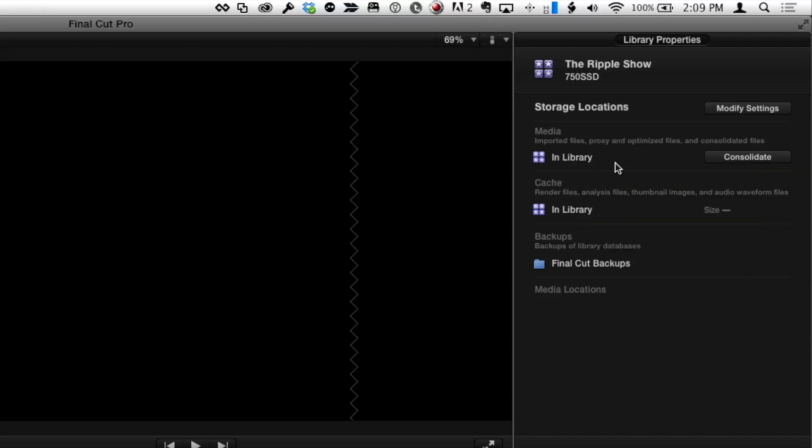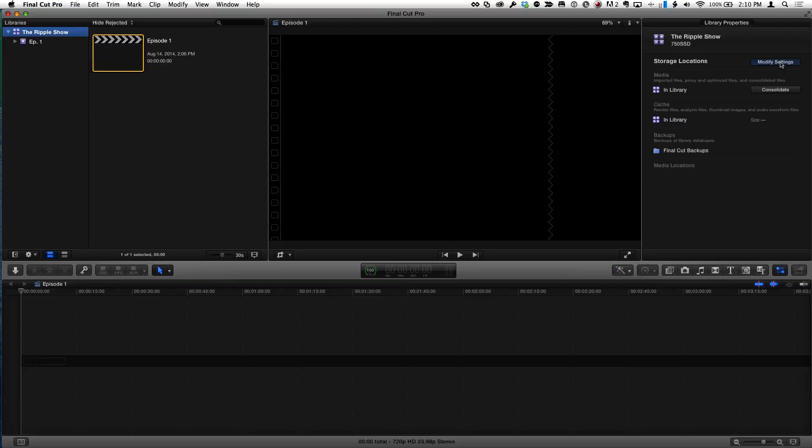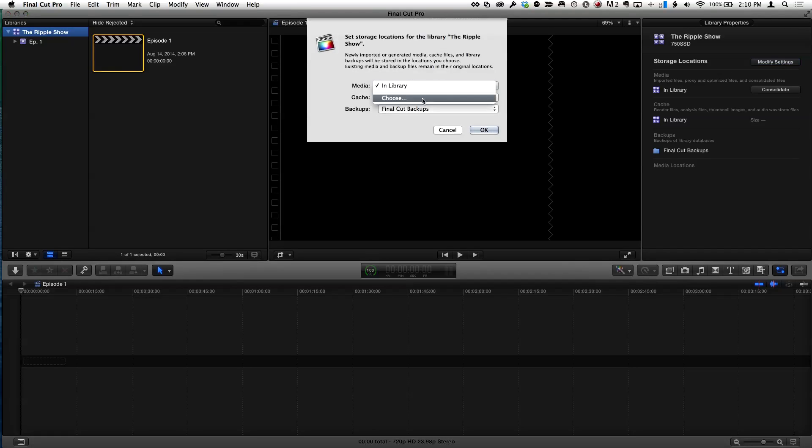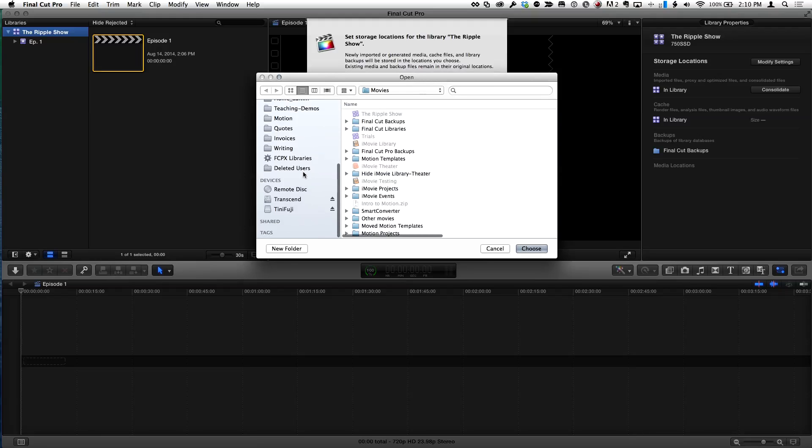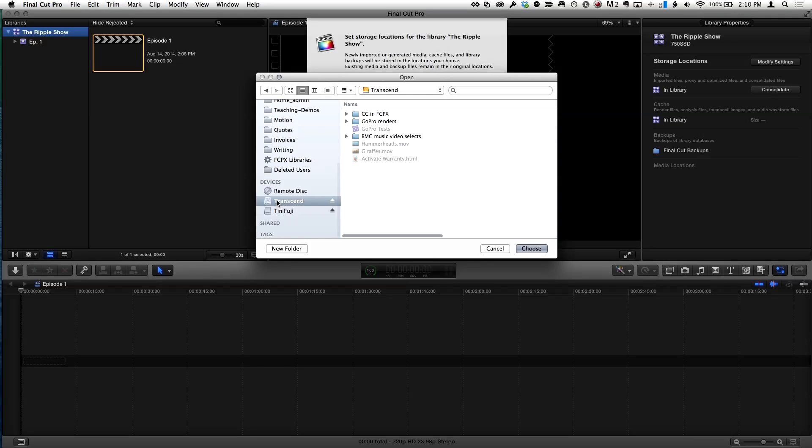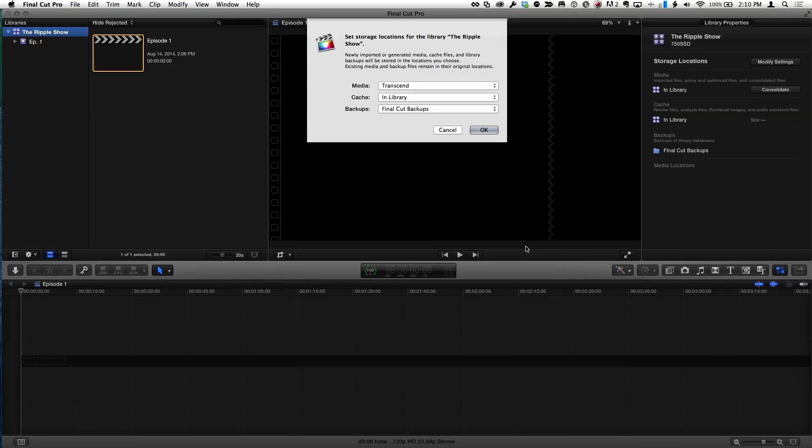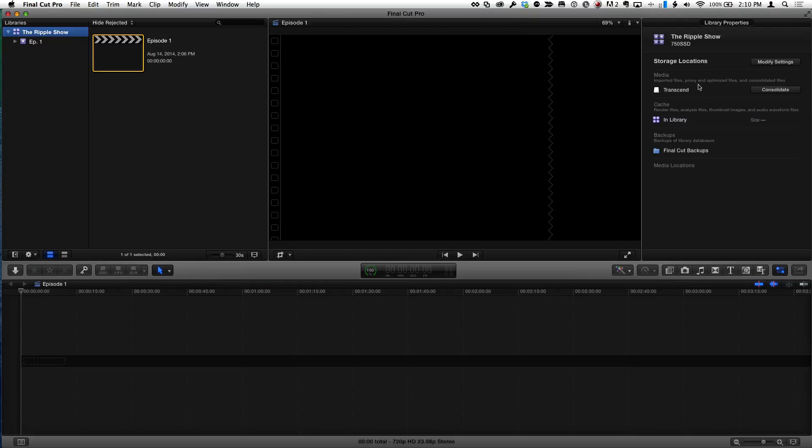In this instance, I want my proxies here on this machine but all my original media on another drive. So I'm going to click modify settings, and for the media I'm going to target that other drive. I have a drive connected here which I'll select and hit choose. Now any media that I import will go to that drive.